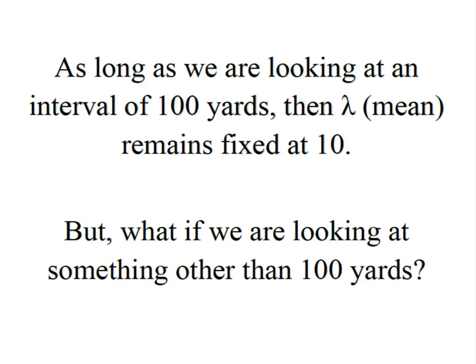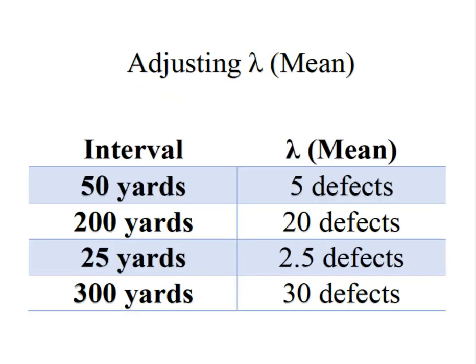But what if we're looking at something other than a hundred yards? This is where we talk about adjusting the value of lambda or the mean. So we originally looked at an interval of 100 yards and it yielded us an average or a lambda equal to 10 defects.